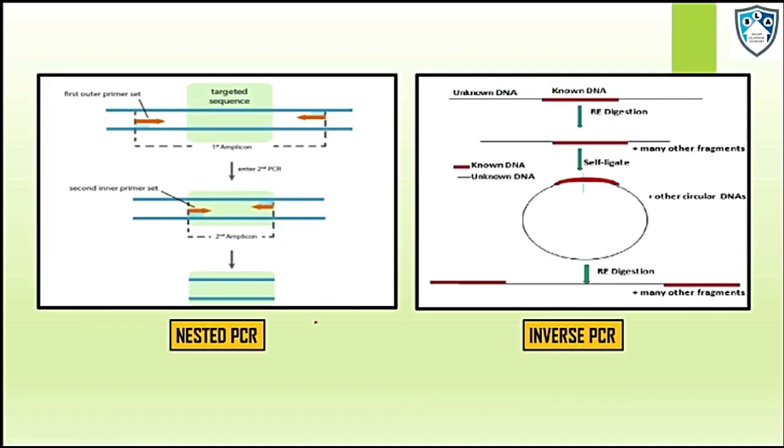The next one is nested PCR. As I have discussed earlier, nested PCR involves sets of two primers. As you can see, the second primer just binds downstream of the first primer.